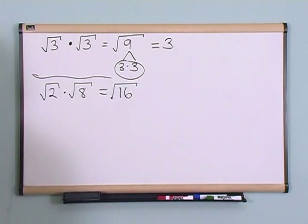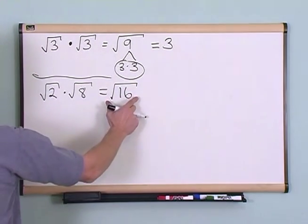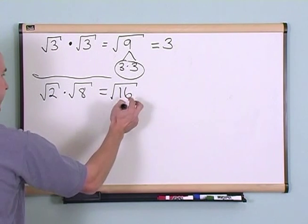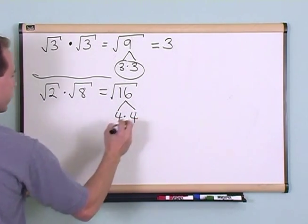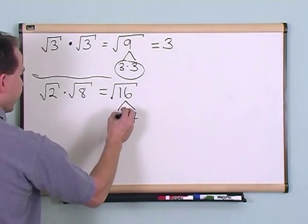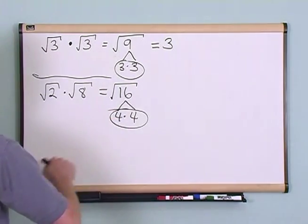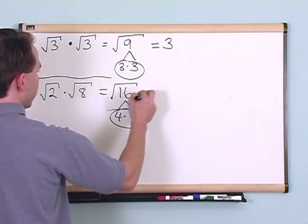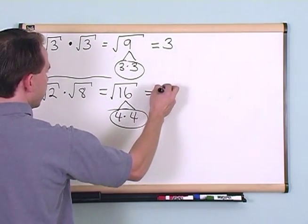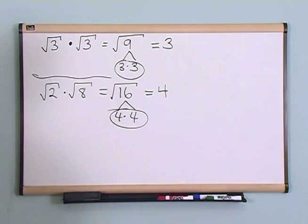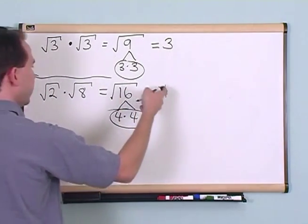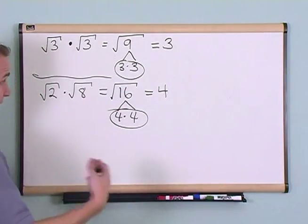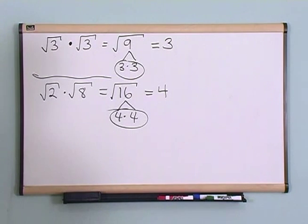2 times 8 is 16, so you put that underneath a new radical. Again, ask yourself: is this fully simplified? 16 is equal to 4 times 4. These are square roots, so I'm looking for pairs. The square root of 16 is equal to 4, and that's the answer. As you work these problems, you'll start to memorize things — square root of 9 is 3, square root of 16 is 4, square root of 64 is 8.